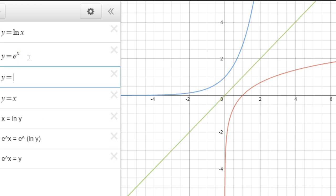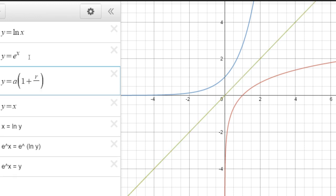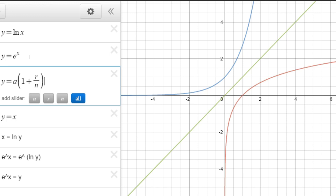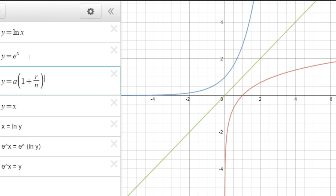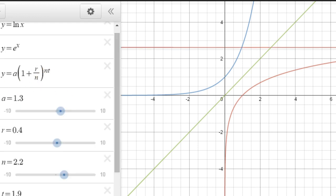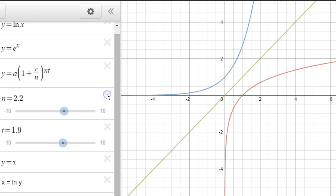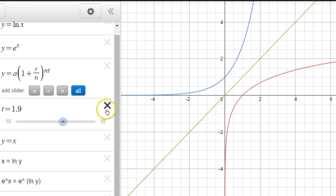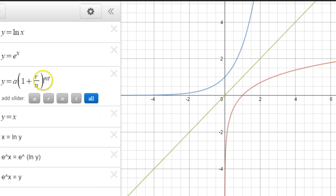Y equals, let's say, a times 1 plus r divided by n to the n. So it'd be as if I could actually take this function, let me get rid of these sliders that I just accidentally added. It'd be as if I took this function and then raise n to infinity.